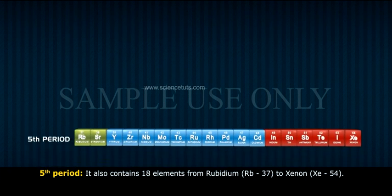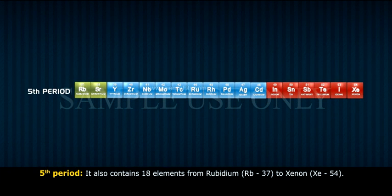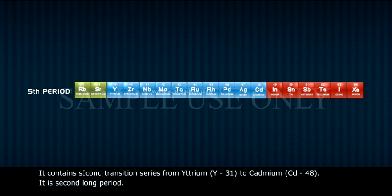The fifth period also contains 18 elements from rubidium-37 to xenon-54. It contains the second transition series from yttrium, Y-39, to cadmium, Cd-48. It is the second long period.